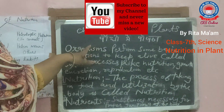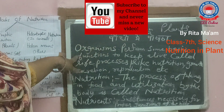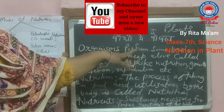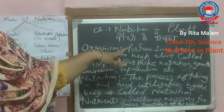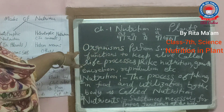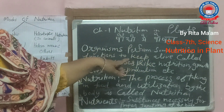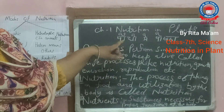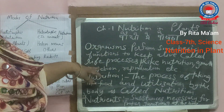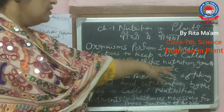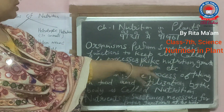All living things perform some basic functions to keep alive. All living things need to perform certain functions to survive, and for those functions they require food. They eat food and get nutrients, and perform functions like nutrition, growth, excretion, reproduction, etc.